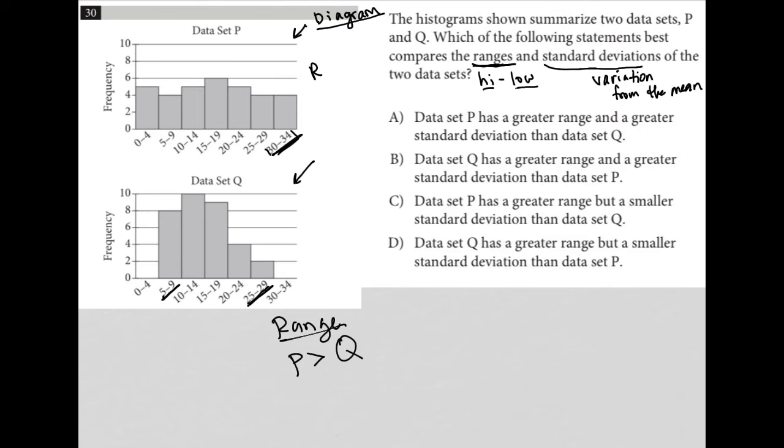Now with regard to variation, we can see that data set P is all spread out. It's kind of similar to range in that way. All the data points are spread out. No bar here seems all that much higher than the others.